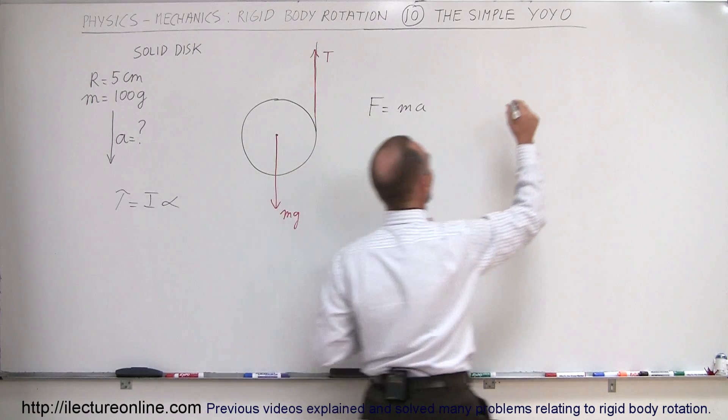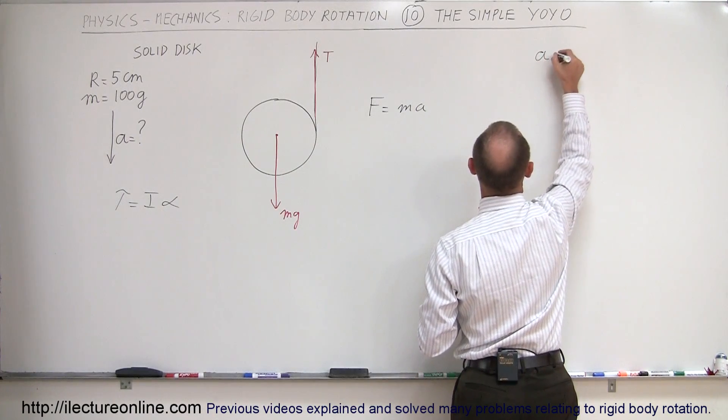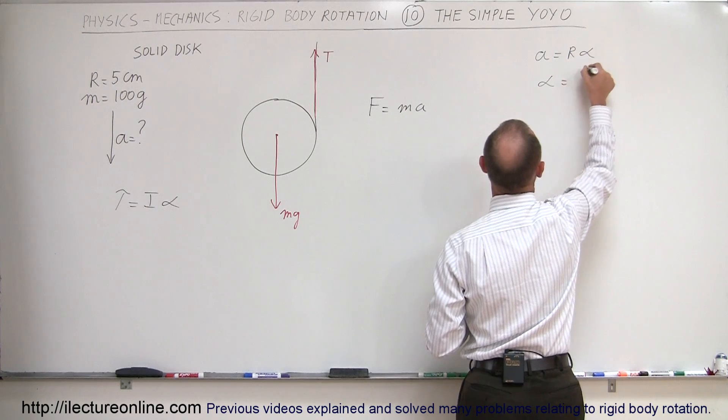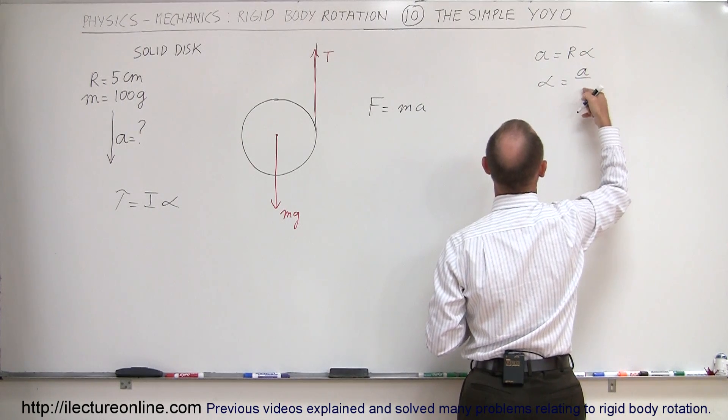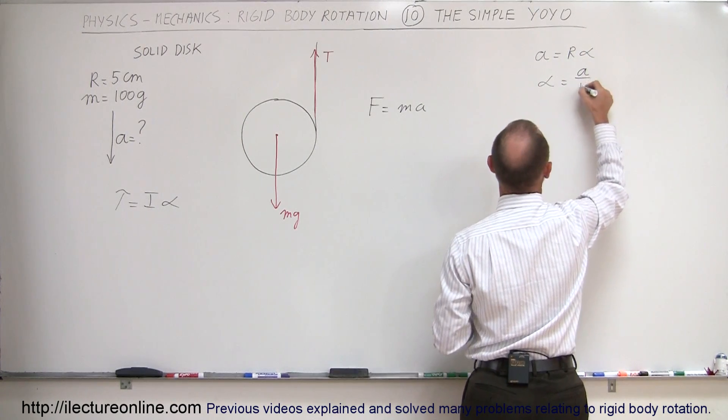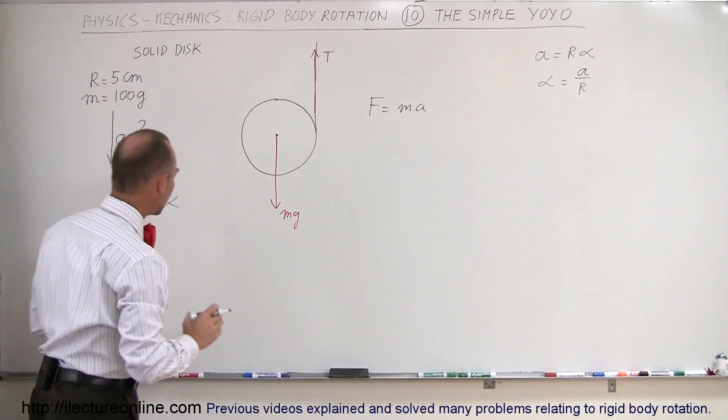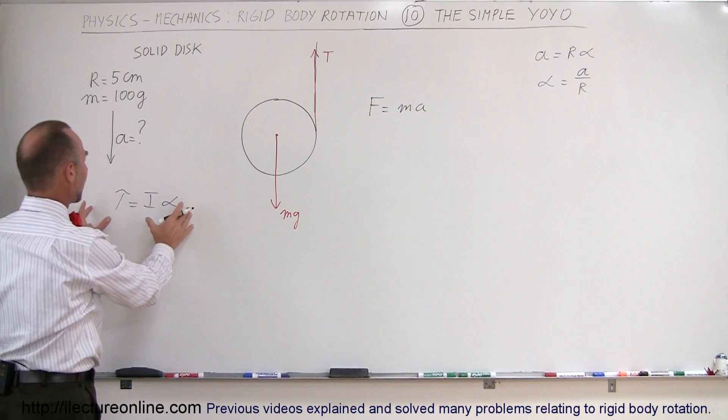The relationship between the acceleration and the angular acceleration is: A equals R times alpha, so therefore alpha can be written as the ratio of the tangential or linear acceleration divided by the radius of the yoyo. So what we're going to do on this side is solve for the equation here first.